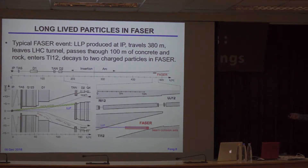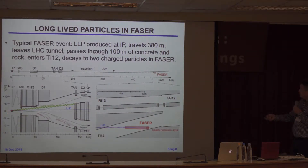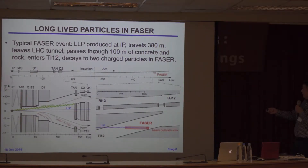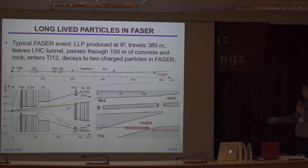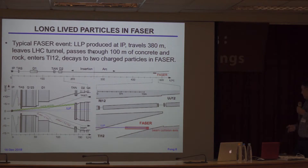A typical FASER event: at the IP, a long-lived particle is produced, travels down the beamline about 380 meters before anything happens, then passes through 100 meters of concrete and rock, and enters the TI-12 tunnel. If you put a detector right there, you can see — for example — an axion decaying to two photons, or a dark photon decaying to an electron-positron pair. You look for that charged visible signal and see new physics.